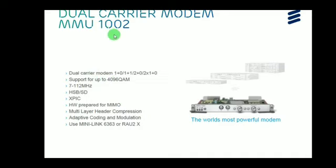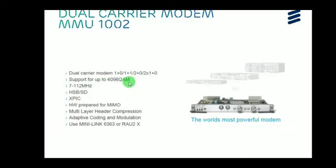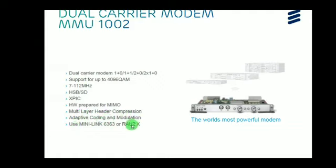The MMU 1002 (Modem Multiplexer Unit) is a dual carrier modem. It supports dual carrier configurations: 1+0, 1+1, and 2+0. It supports up to 4096 QAM modulation and bandwidth from 7 to 112 MHz. It supports hard standby or space diversity configuration, XP cross-polarization interference cancelling, and is hardware-prepared for MIMO (Multiple Input Multiple Output) functionality. It also supports multi-layer header compression and adaptive code modulation. It can be used with Minilink 6363 or RAv2x radio.